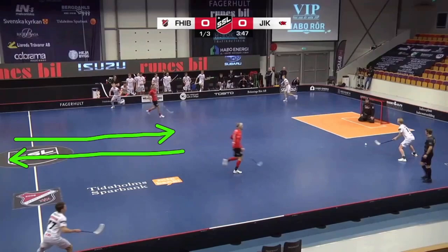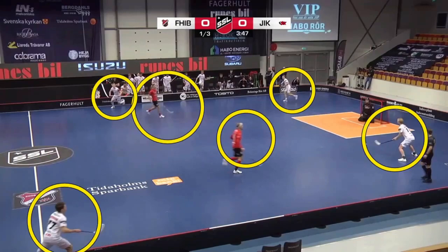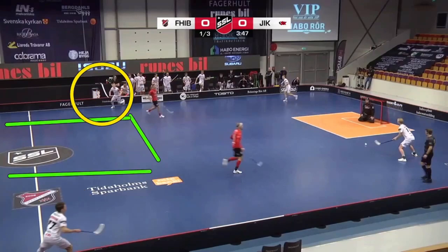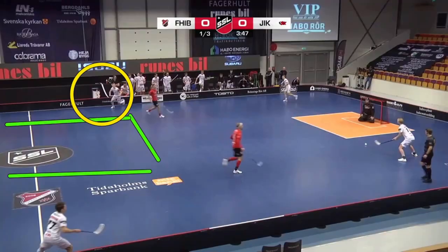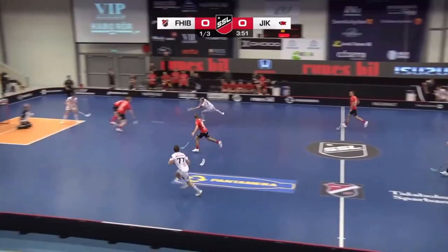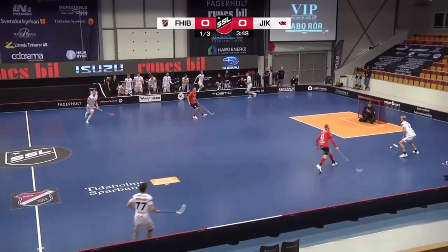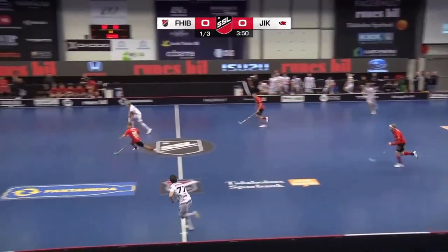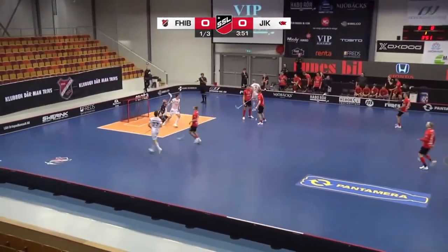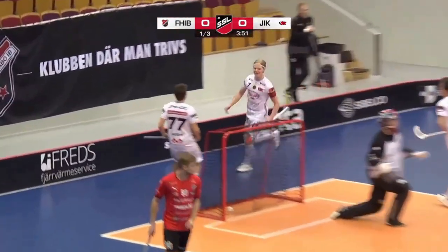That being said, I would like to know what you think about the defense set up by the red team here. What system were they playing? Why did they allow an outnumbering situation against their two forwards? Perhaps they were caught changing players at a bad time — I'm not sure, but I'd like to know what you think. Thank you for watching and I'll see you in the next video.